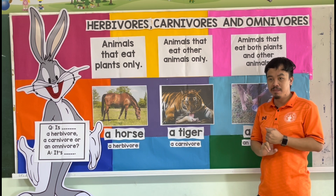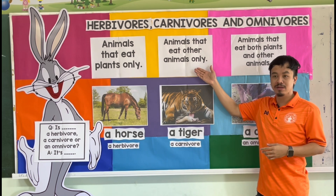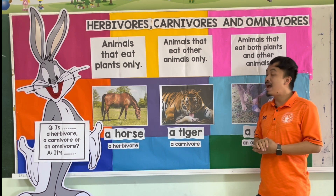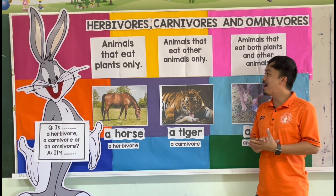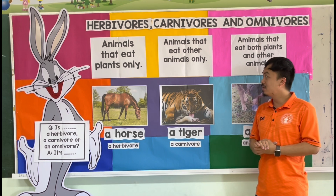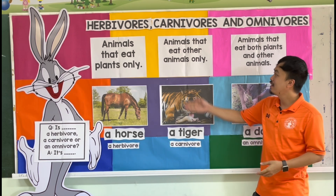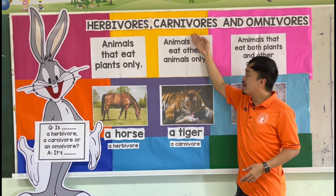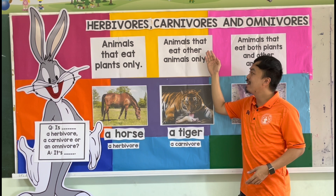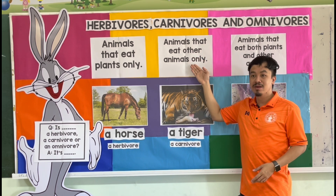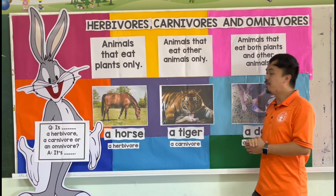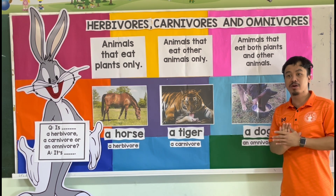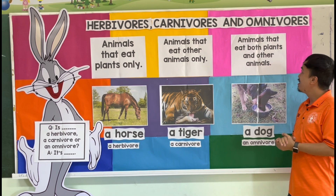The second group of animals is carnivores. Carnivores are animals that eat other animals only. The key word is animals. Let's move forward to the third group of animals, which is omnivores.